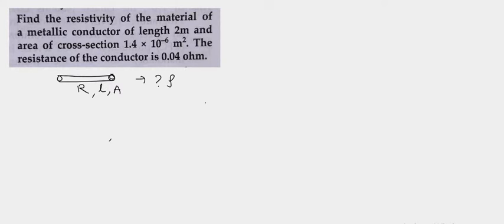In order to find out resistivity, first let us understand the relation between resistivity and resistance of the conductor. The resistance of a conductor varies directly as the length of the conductor, and varies inversely as the area of cross section of the conductor. Combining these two, we get R varies as L by A, or R is equal to rho L by A.